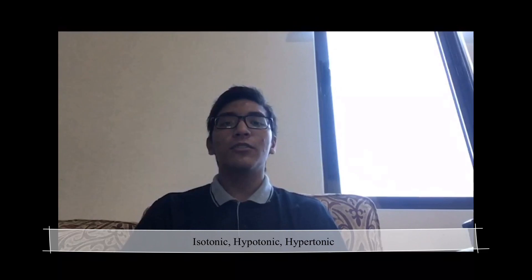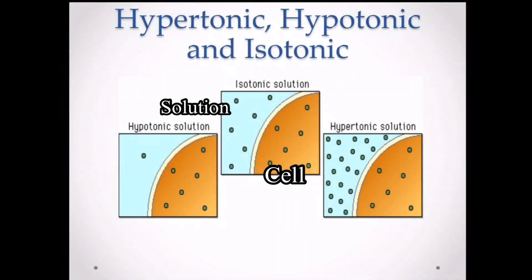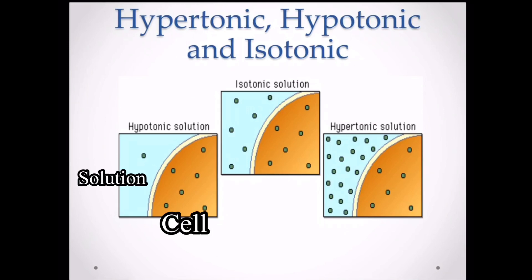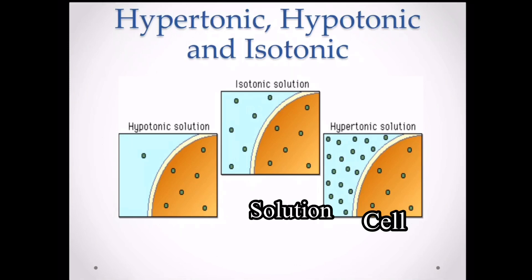Now we are going to learn about isotonic, hypotonic, and hypertonic solutions. In an isotonic solution, the solution and the cell have the same concentration and have reached dynamic equilibrium. In a hypotonic solution, the solution has low solute concentration and high water potential, so water will diffuse into the cell by osmosis. In a hypertonic solution, the solution has high solute concentration and low water potential, so water will diffuse out of the cell by osmosis to reach dynamic equilibrium.